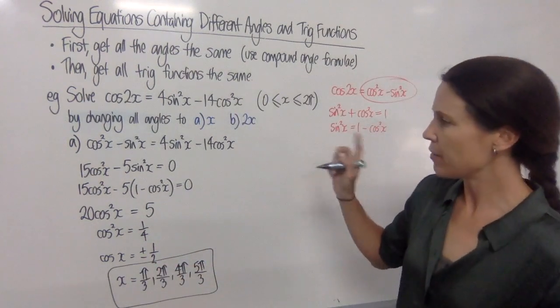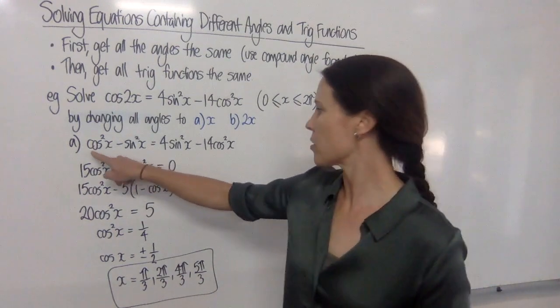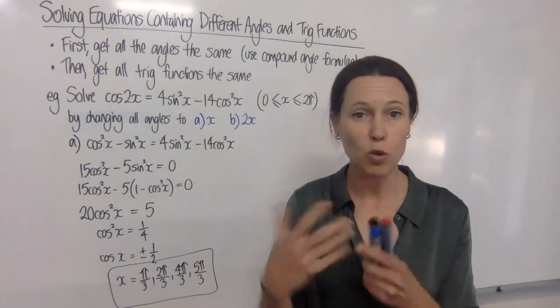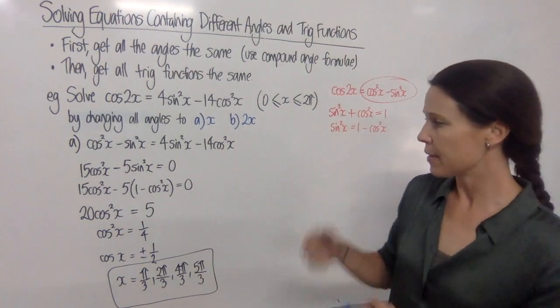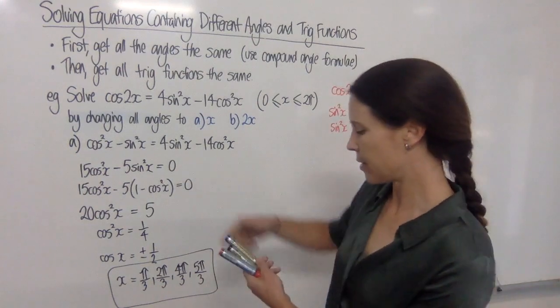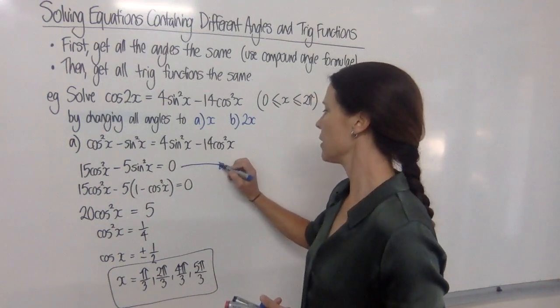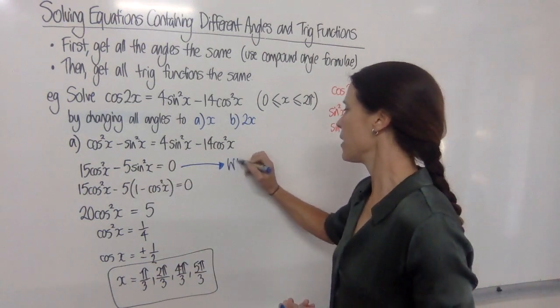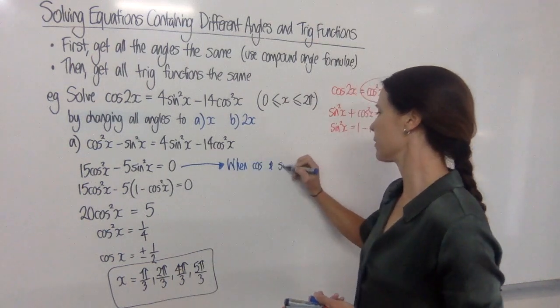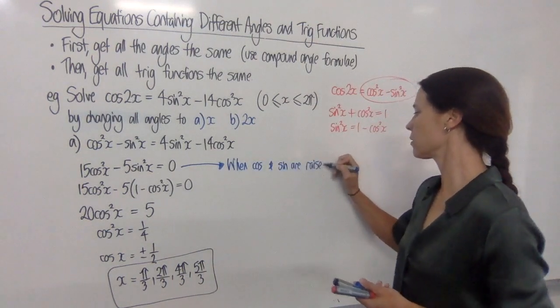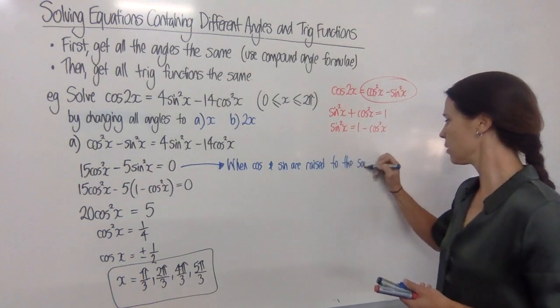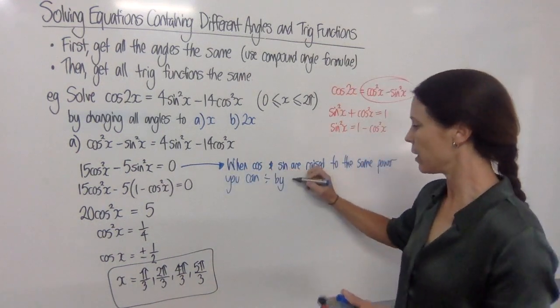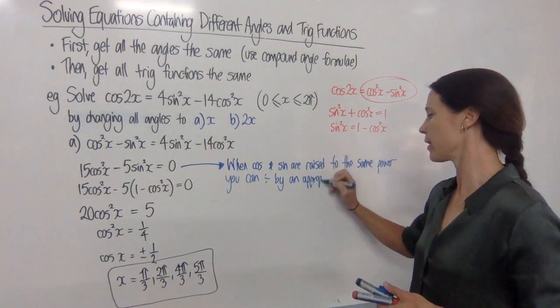Okay, now how else could I have done it? Well, there's a bit of a hack that when you have your cos squareds and sine, sorry, when you have cos and sine both raised to the same power, here they're squared, but if they are all cubed or they're all to the power of four, then there's another trick you can do, which is quite handy. Back at this step here, what we could have done is we could have divided both of these terms by cos squared x. So let's write this down as a little note. When cos and sine are raised to the same power, you can divide by an appropriate power of cos squared x.